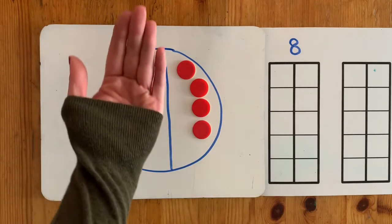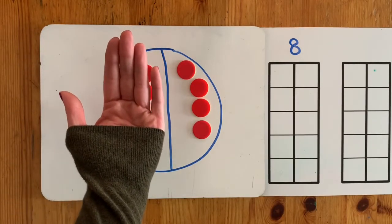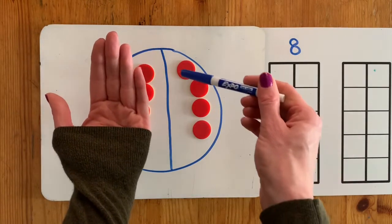I'm going to cover one side and now what's half of eight? Half of eight is one, two, three, four.